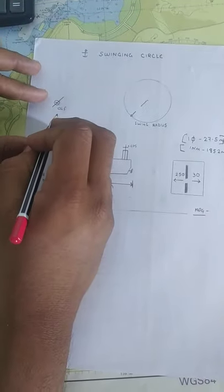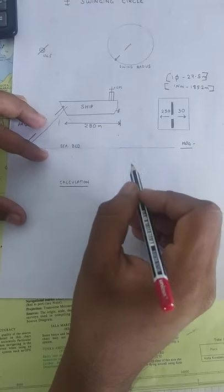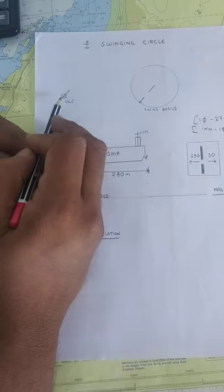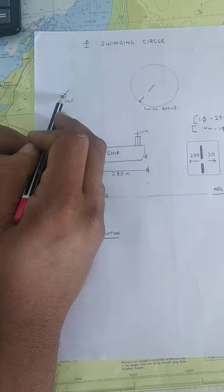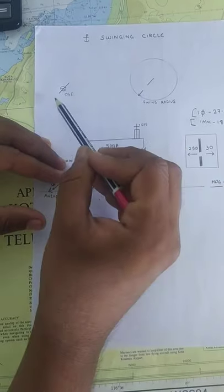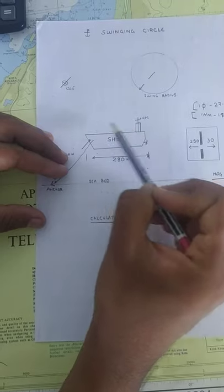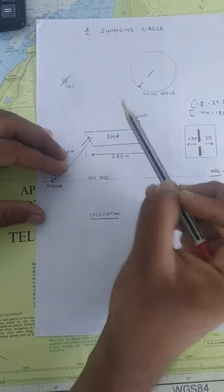I hope you understood what it was. After that, the calculation is simple. Again, even if your ship's GPS is here, once you are swinging, the GPS position will be here. So, we have to calculate again with the same ship GPS distance.